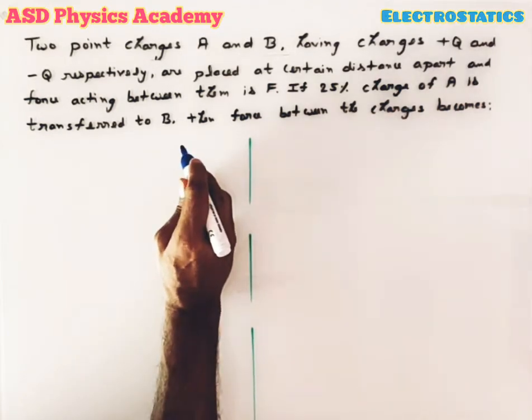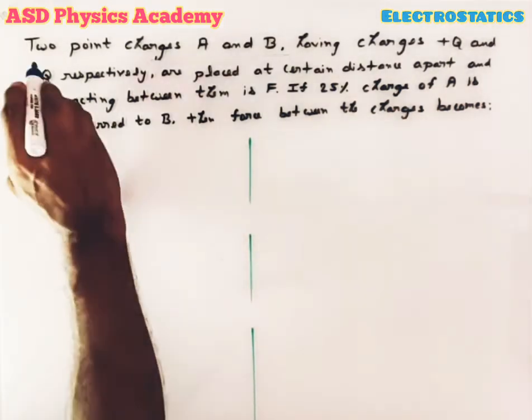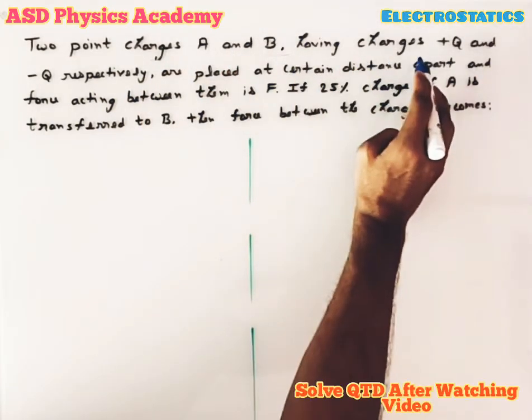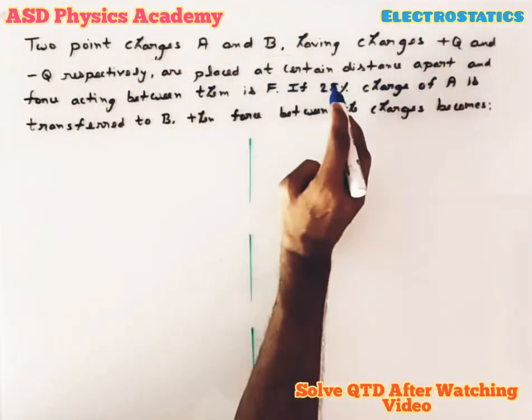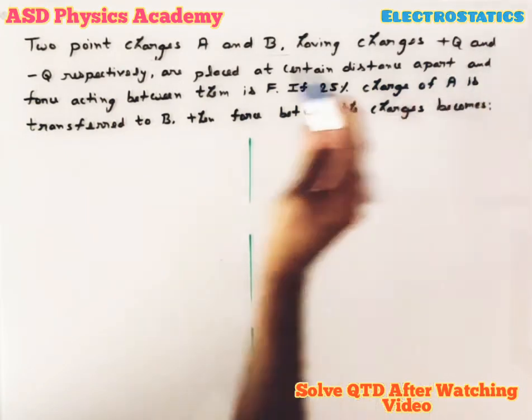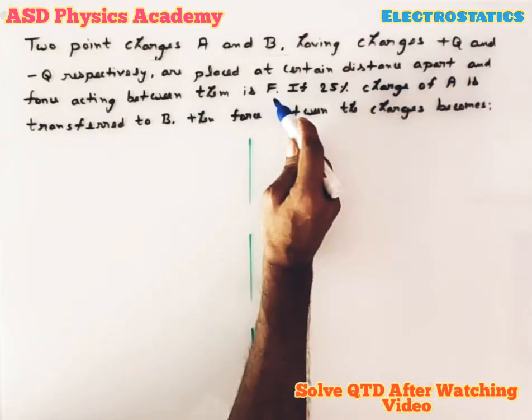Two point charges A and B having charges +q and -q respectively are placed at certain distance apart and force acting between them is F. If 25 percent charge of A is transferred to B, then force between the charges becomes...